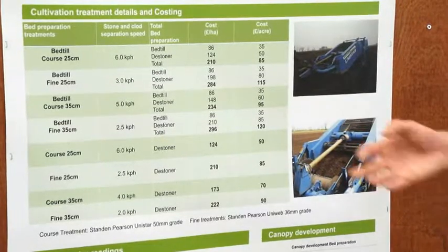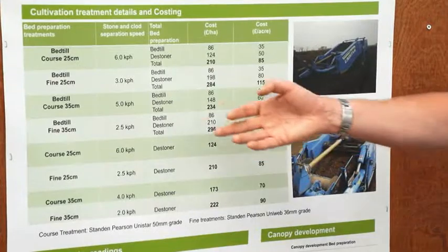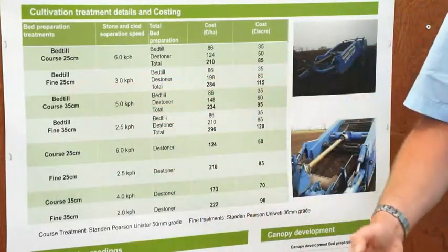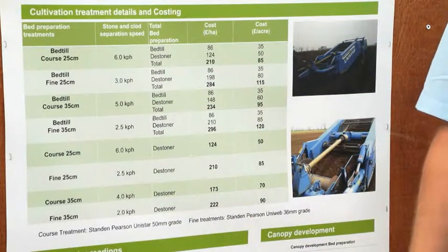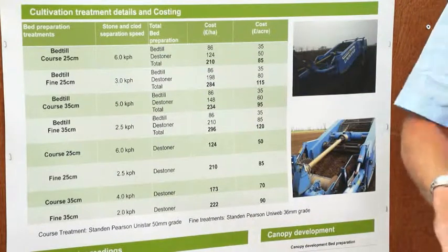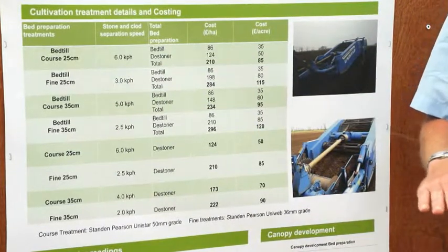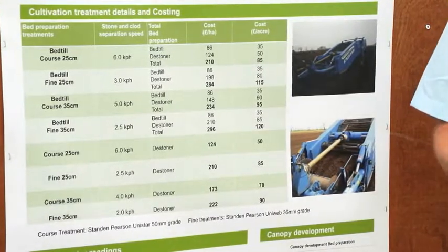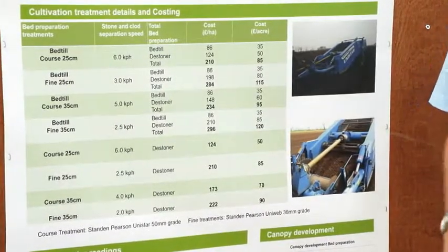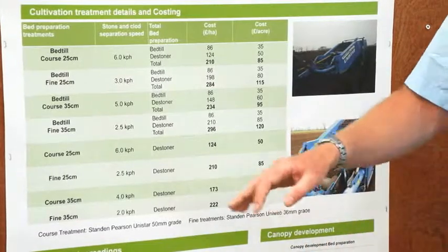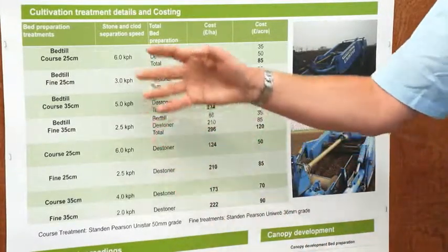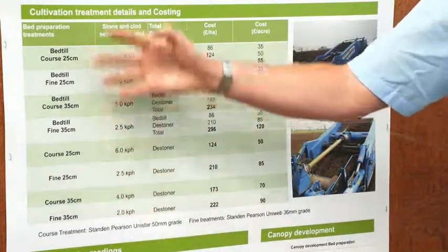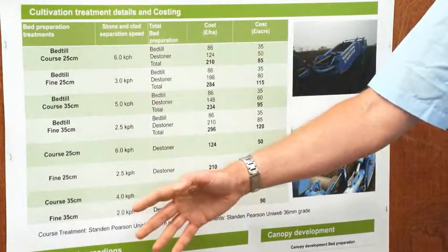There's been a lot of talk about not de-stoning any deeper than you have to, so we put in a 25 vs 35 centimetre comparison of the depth of the stoner share. And because of the difference we got with the bed tiller last year in particular, we've replicated all those treatments with and without the bed tiller.